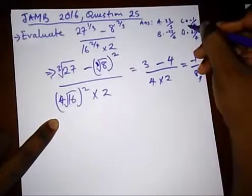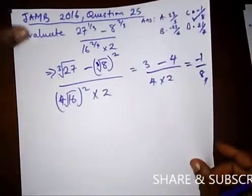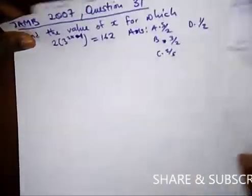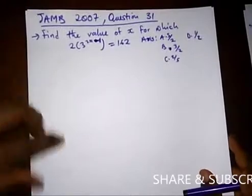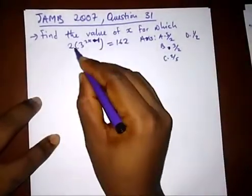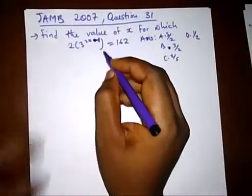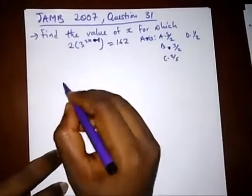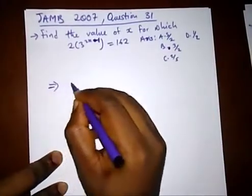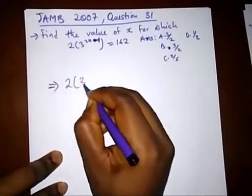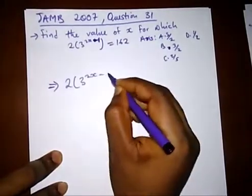Here we have another question: find the value of x for which 2 bracket 3 raised to 2x minus 1 is equal to 162. I know for some people when you see this question, you might be confused about what 2 is doing outside the bracket.